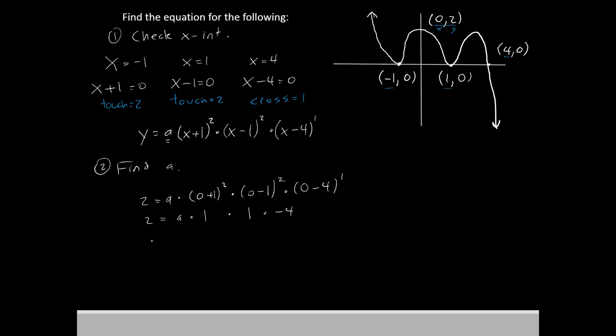If we simplify, we'll have 2 equals negative 4a. And then if we simplify a little bit further, we just divide both sides by negative 4, we'll have negative 2 fourths equals a, which is the same thing as negative 1 half.